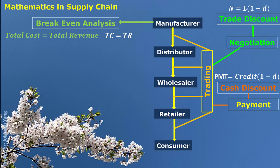The cash discount involves the actual payment and the credit received. The relationship is very similar to the relationship between net price and list price. If the payment exceeds the credit period, or if you do any investment or money borrowing, they all involve interest. We have a part to talk about interest.